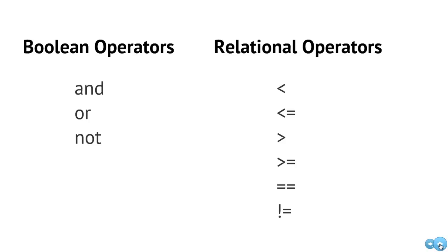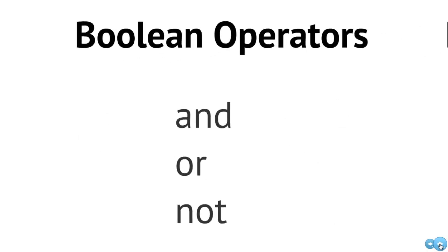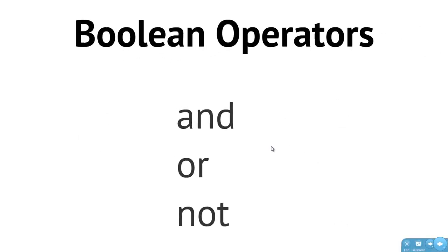In this video we're going to take a look at Boolean operators and relational operators. First, let's look at the Boolean operators. We have three Boolean operators: the AND, the OR, and the NOT.